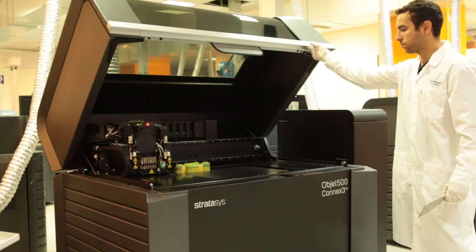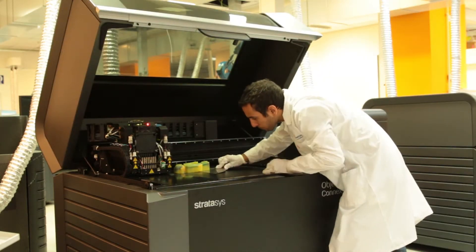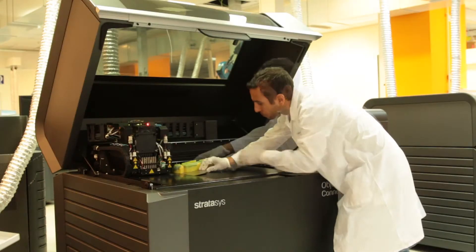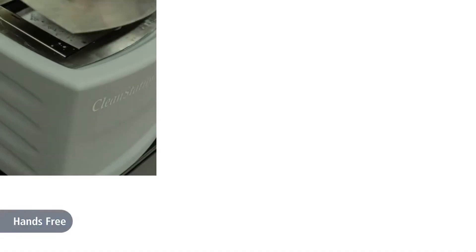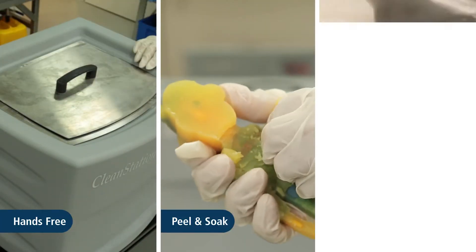Once the parts have been printed using SUP706B support material, remove them from the tray. SUP706B is unique in that it can be removed with three different methods: hands-free, peel and soak, and water jet.